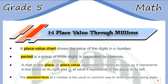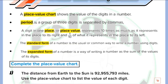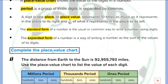For any number we can write it in different forms. The first form is called the standard form, where we use digits to write the number. The second form is called the expanded form, where we use the sum of the values of each digit. The last form is called the word form, where we use words to write the numbers.